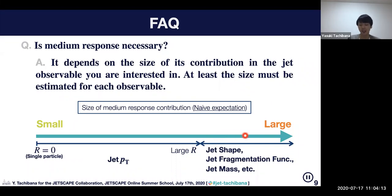But if you're interested in substructure observables like jet shape, jet fragmentation, or jet mass, which are very sensitive to the detailed structure—the jet path, jet energy and momentum for each constituent—then you need to consider the contribution of medium response, because you can have more chances to have that contribution.